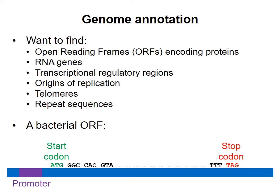Just about all open reading frames start with an ATG codon and end with one of the three stop codons. In between will be the triplet codons that specify which amino acid should be at which position of the protein. Open reading frames will also have associated regulatory elements, such as a promoter.